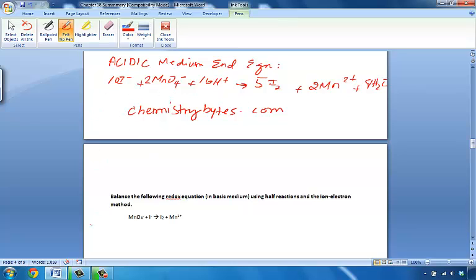So what we need is this particular equation, this 10I⁻ plus 2MnO₄⁻ and 16H⁺, which yields 5I₂s, 2Mn²⁺, and 8H₂Os.